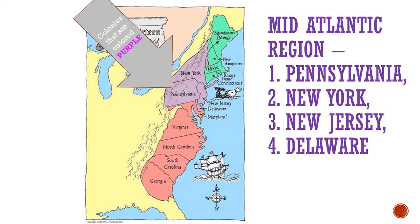The middle colonies includes a group of four colonies. Go ahead and title today's notes 'Mid-Atlantic Region' and then number the four colonies we will be studying today: Pennsylvania, New York, New Jersey, and Delaware.